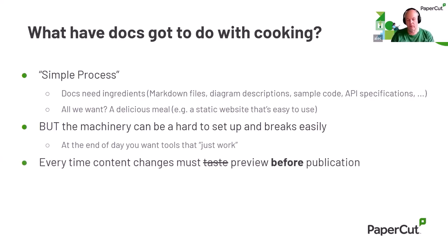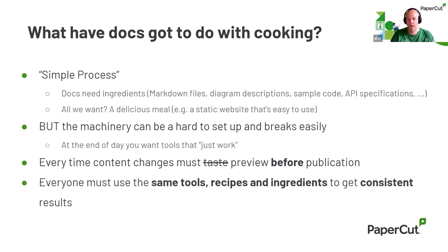An important motivation is that we want editors to get a high fidelity rendition of the changes they're making — so they can understand not just the words they've changed, but the way those words will appear, how they relate to images in the document, and whether images are in the correct place. They need basically a duplication of how the content will look when it's published through the full CI/CD publication pipeline. And everybody across the whole team has got to use the same tools for consistent results.